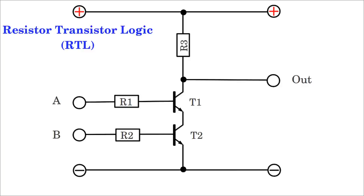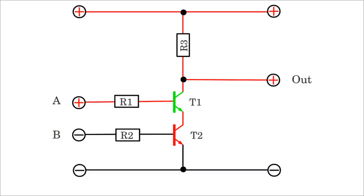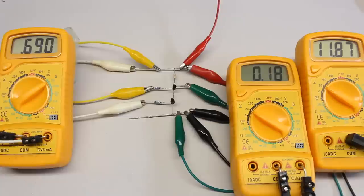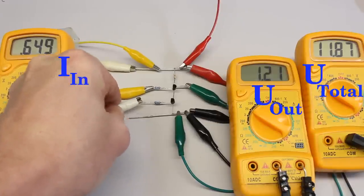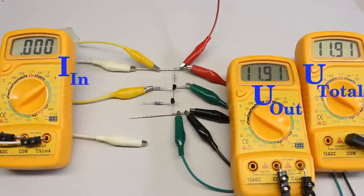Resistor-transistor logic, or short RTL, is a class of circuits using resistors at the input network and bipolar junction transistors at the output. Here you can see an RTL NAND gate. If the input of at least one of the transistors is low, the accordant device cannot conduct, hence the output signal is high. The only way the output can be low is if both transistors are turned on by a high level at the inputs. As you can see, the current running through the inputs is negligible and the potential at the output is very close to the ideal state, at least while there is no load connected to the output.